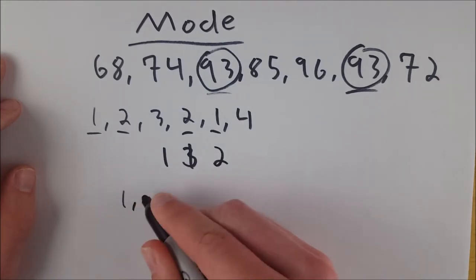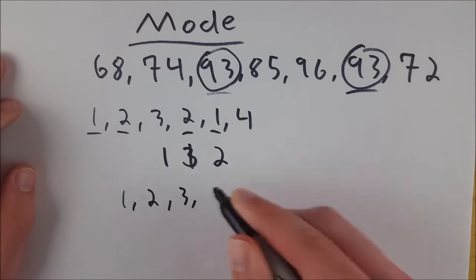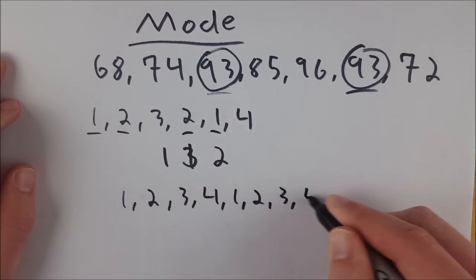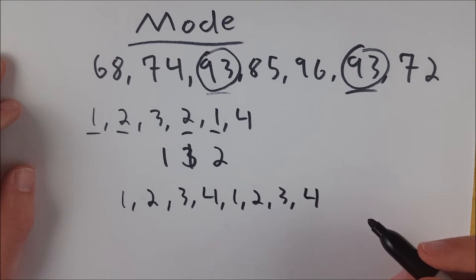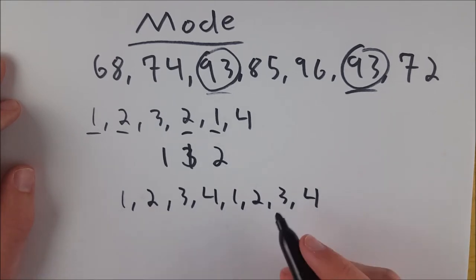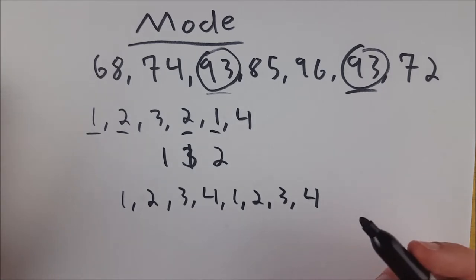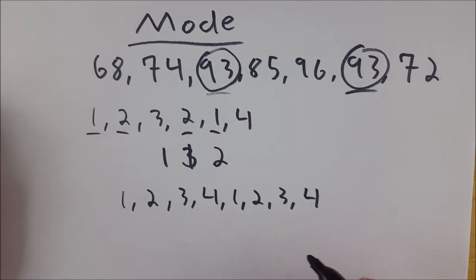Now, if we had something like one, two, three, four, one, two, three, four, let's say these were our data points. There is no mode in this set of data because there is no number that appears more than any other number. They all just appear twice.